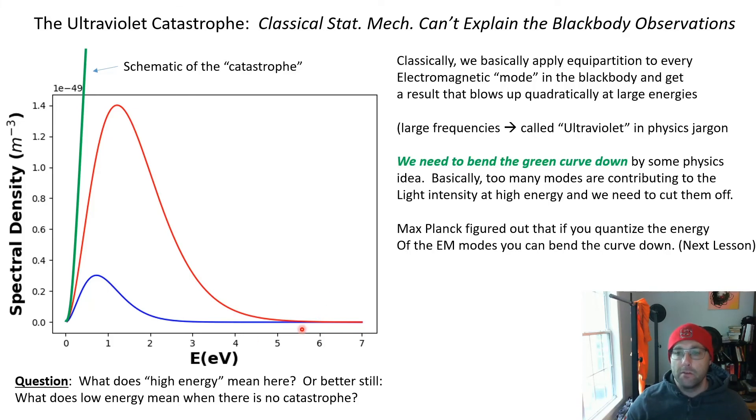And so the basic idea that Max Planck figured out is that just in some ways, just by inspecting the statistical mechanics calculation he was doing, he realized that if he went in by hand and said no, the energies can't be any old thing you want for the electromagnetic radiation, they have to be quantized as an integer multiple of Planck's constant times frequency, then you can make this happen.